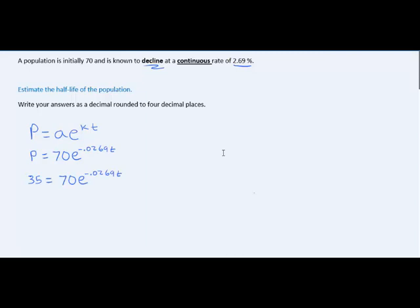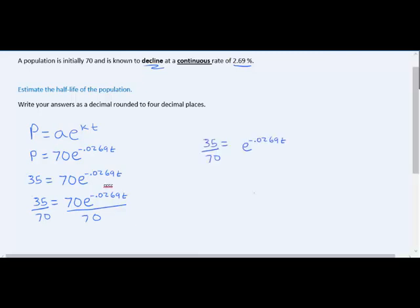The first step to solve this for T is to isolate the exponential term. Since the exponential term is being multiplied by 70, I will isolate it by dividing by 70 on both sides. The 70 divided by 70 on the right-hand side simplifies down to 1, leaving me with the equation 35/70 = e^(-0.0269t).